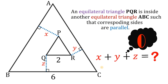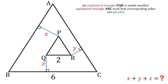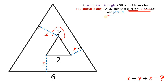Now let's answer this question together. So given this figure, an equilateral triangle PQR is inside another equilateral triangle ABC, such that corresponding sides are parallel. To answer this question, we will use one theorem. But before that, let's focus first on point P. What we're going to do is to use the given that corresponding sides are parallel, and we will use this concept to solve this kind of question.